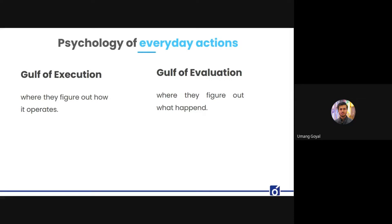The psychology of everyday actions: whenever we try to perform a task or achieve a goal through a product, we are always faced by two divisions — two gulfs. The gulf of execution is where we figure out how a product operates and what can be done. The gulf of evaluation is where humans figure out what actually happened considering the actions they took and the results.